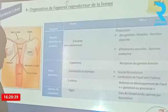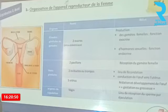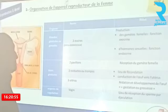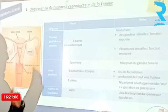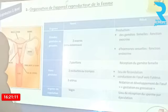Le vagin est l'organe de copulation, lieu de la réception du sperme au cours d'une éjaculation. On note la présence des gonades, des voies génitales, des organes de copulation. Par comparaison avec le sexe masculin, on note l'absence des glandes annexes. Il faut se rappeler qu'on étudie la fonction de reproduction chez la femme après avoir étudié celle chez l'homme, donc il doit y avoir des possibilités de comparaison.